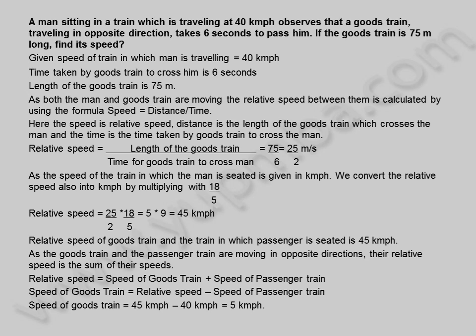Is equal to 5 kilometers per hour. The speed of goods train is 5 kilometers per hour.